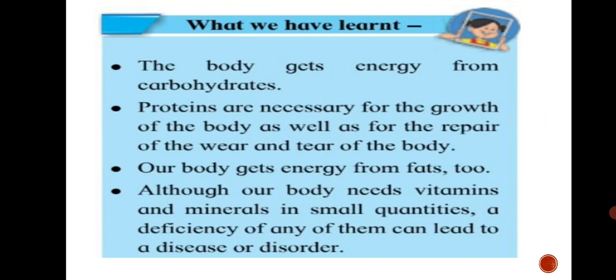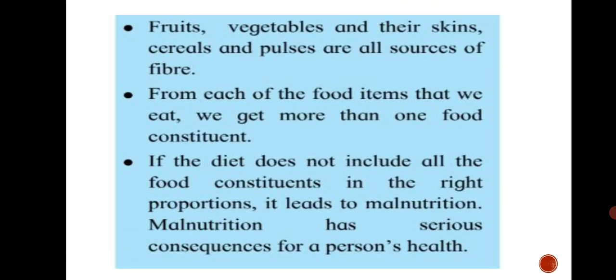What we have learnt in this chapter? The body gets energy from carbohydrates. Proteins are necessary for the growth of the body as well as for the repair of the wear and tear of the body. Our body gets energy from fats too. Although our body needs vitamins and minerals in small quantities, a deficiency means inadequate consumption of vitamins and minerals can lead to a disease or disorder. Fruits, vegetables and their skins, cereals and pulses are all sources of fiber. From each of the food items that we eat, we get more than one food constituent. If the diet does not include all the food constituents in the right proportion, it leads to malnutrition. Malnutrition has serious consequences for a person's health.